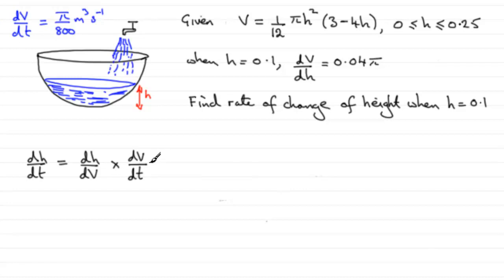Now in the previous part, we worked out what dV by dh was when h was 0.1. So we can say then that when h equals 0.1, dh by dt, let's just put it down here,